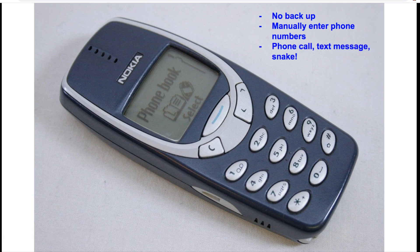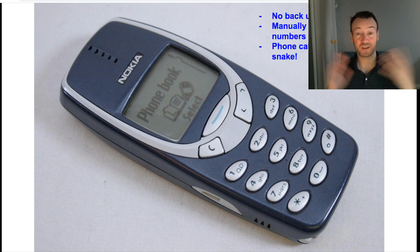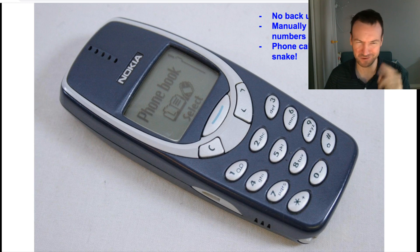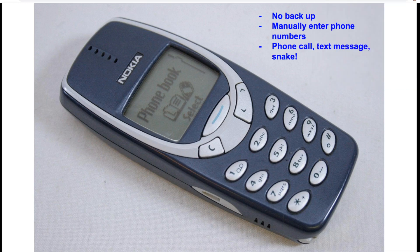And all you could do was phone calls, texts, and there was a game called Snake that was just a game with a line on it. So that was it — you could call somebody, text message somebody with no emojis, or you could play one game called Snake. I think some phones had two games, but it originally just had one. There were no apps. You had phone book, text message, and a game. There was no GPS, no maps, nothing like that. It was literally just a phone that you could also message from.